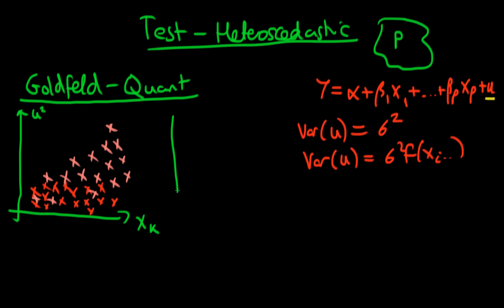How do we test for heteroskedasticity in the population given we only have a sample and don't observe u directly? A sensible approach is to replace the population error with our estimated error — the residuals. If we estimate a model by least squares we get estimated parameters and residuals u-hat. It turns out this substitution is fine at least asymptotically, and gives us a way of testing for heteroskedasticity using only what we can estimate from our sample.